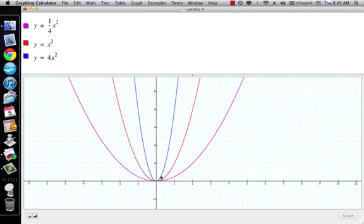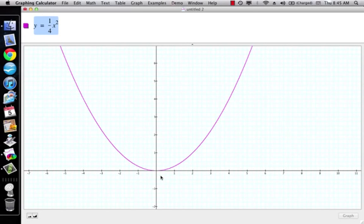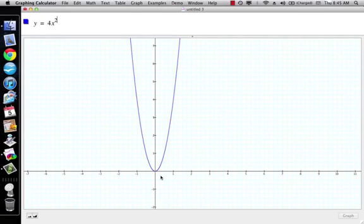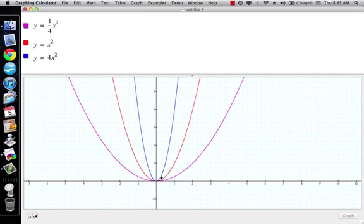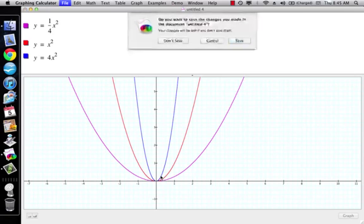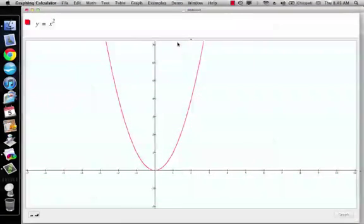Well, I want to show you that they are the same shape. So what we're going to do is we're going to go to this one. So that's y equals 1 fourth x squared. That's y equals 4x squared, and that's y equals x squared, and they all come from that right there. Okay, so I'm going to close this one out, and I'm not going to save it. So we're left with those.